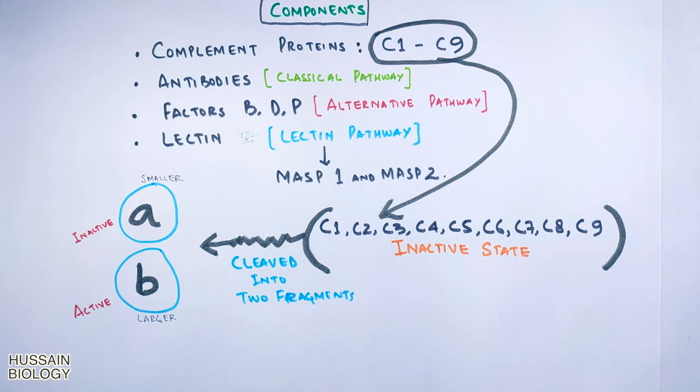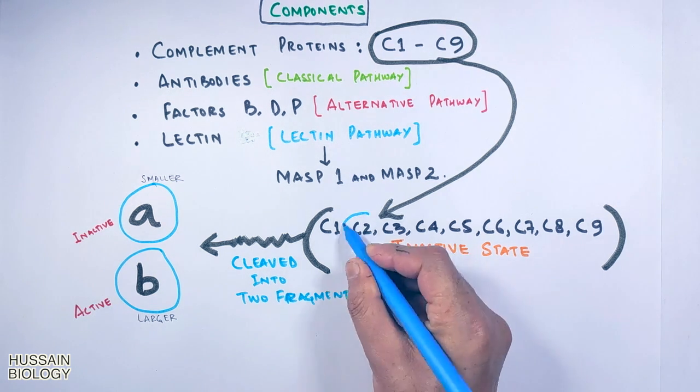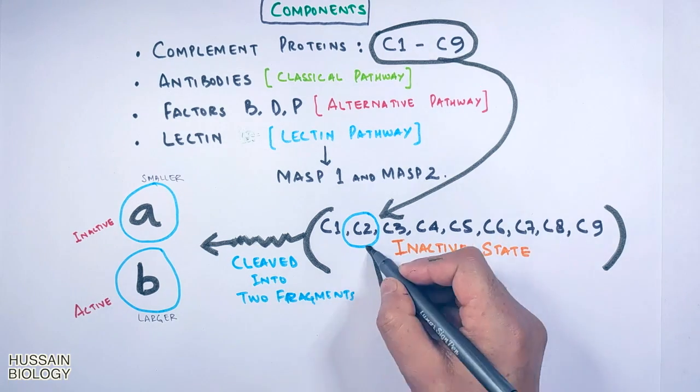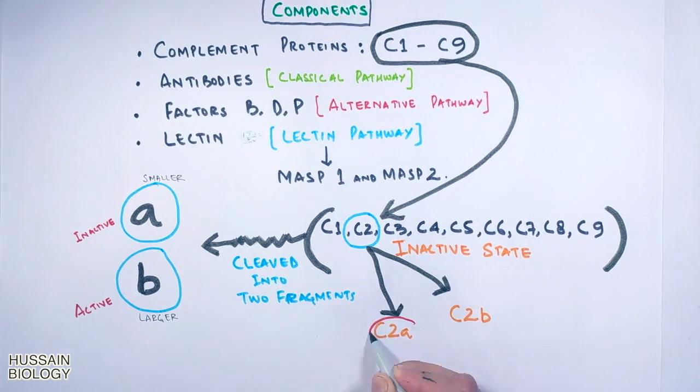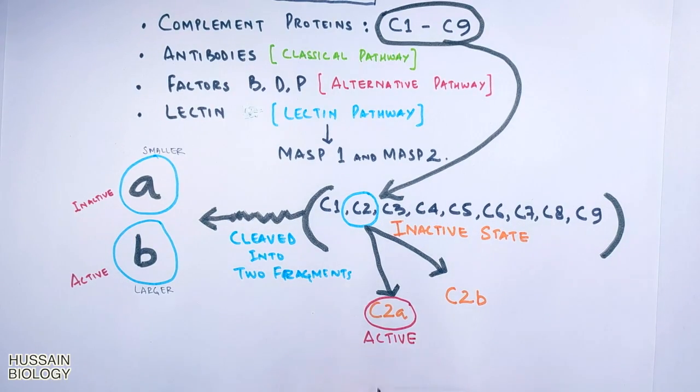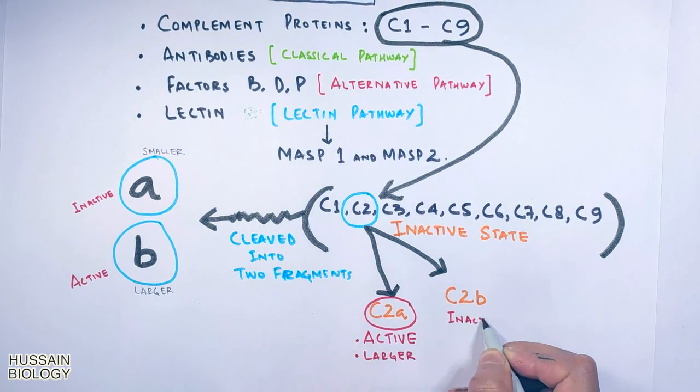But it must be noted here, in case of C2 protein when it's cleaved into C2a and C2b, the C2a is active and is larger while C2b is smaller and inactive.